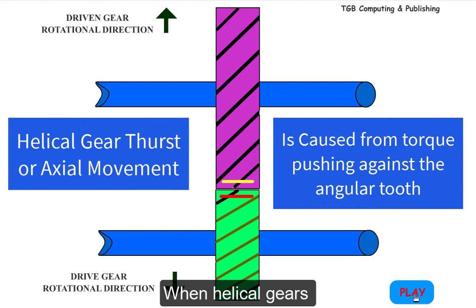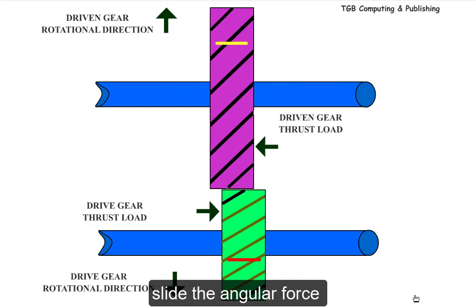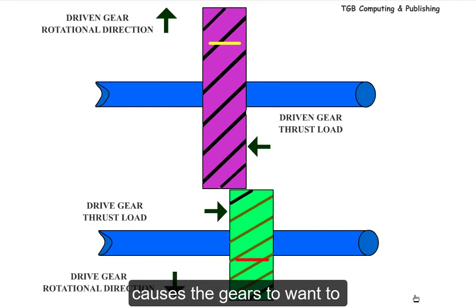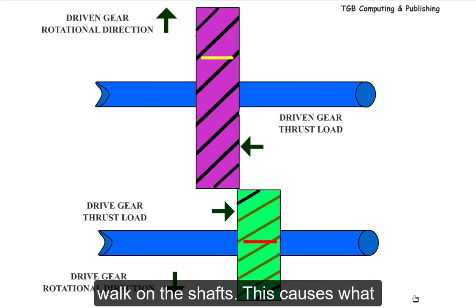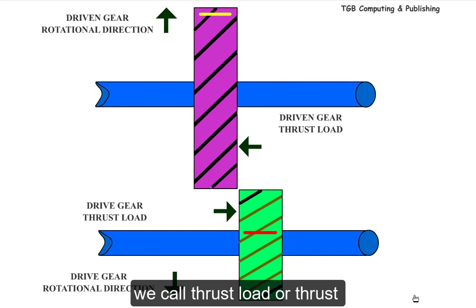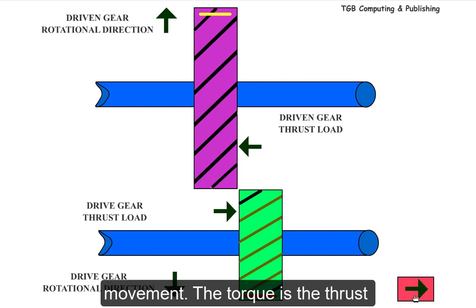When helical gears rotate together, the torque going through those gears causes the teeth to slide along each other. As they slide, the angular force causes the gears to want to walk on the shafts. This causes what we call thrust load or thrust movement.